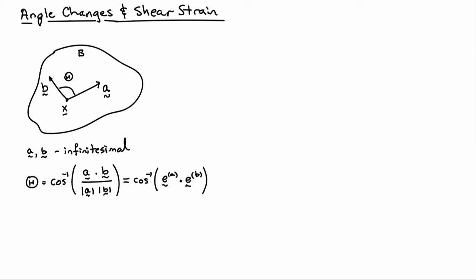Now, we can rewrite this also slightly as the arc cosine of the dot product of the two unit vectors that are aligned with A and B. I have a unit vector here, E A, and a unit vector here, E B.